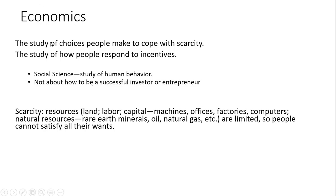Economics is the study of choices people make to cope with scarcity. The two key ideas are choices and scarcity. Another way to think of economics is the study of how people respond to incentives — changes in costs and benefits. Economics is a social science; it's a study of human behavior. Resources are scarce: land, labor, capital — which in economics refers to machines, offices, factories, earth-moving equipment, computers — and natural resources. All of these things are limited by nature, so people cannot satisfy all their wants.